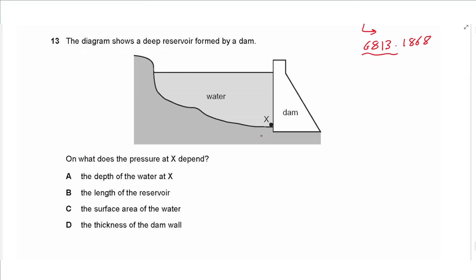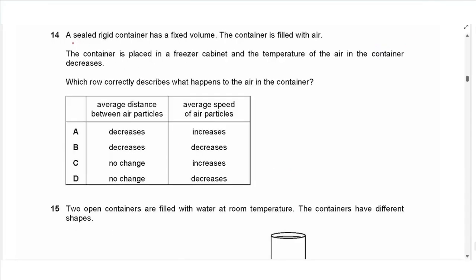Question 13: the diagram shows a deep reservoir formed by a dam. Pressure in a liquid equals ρgh — density, gravitational field strength, and depth. So the pressure at X depends on the depth of the water at X. The length of the reservoir, surface area, and thickness of the dam wall do not affect it.